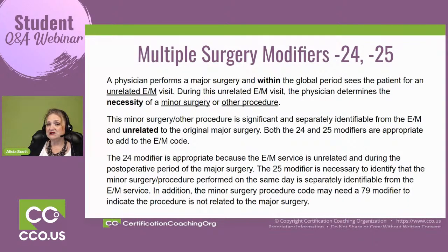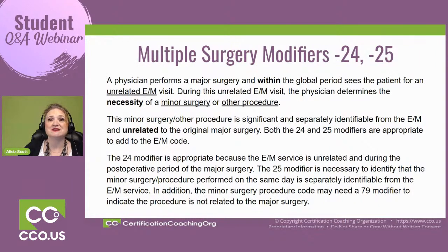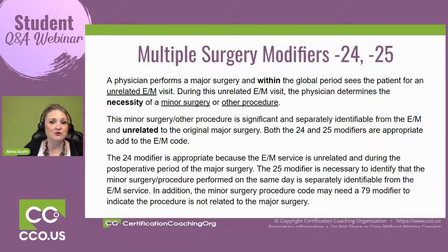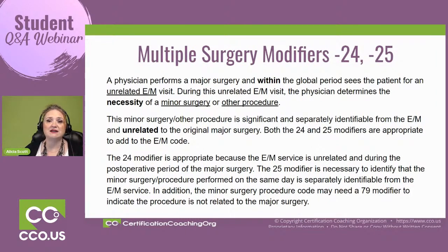What would happen if we needed to use more than one E&M to tell the whole story? Given the example: you have a major surgery, you're within the global period, and you have an unrelated E&M visit. If the provider determines a minor surgery or other procedure is also necessary, you would end up with both modifier 24 and modifier 25. Because the E&M is unrelated to the original procedure, modifier 24 is appended to the E&M service, and modifier 25 identifies that another procedure is being done and is separately identifiable.